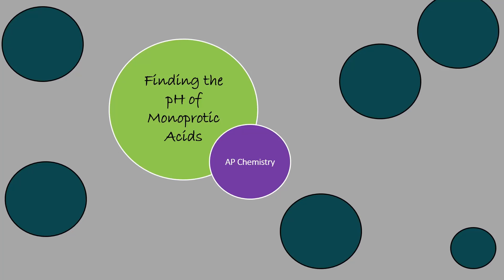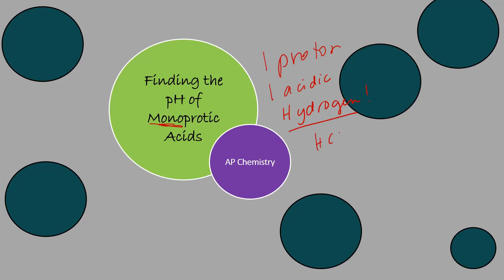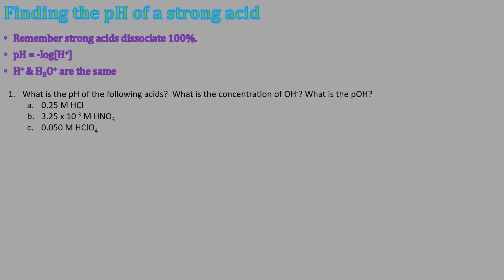This video is about finding the pH of monoprotic acids. Monoprotic means one proton — the acid has just one acidic hydrogen. Acids like HCl or HNO₂ are both monoprotic acids. There are specific methods for finding the pH of these, so let's look at that.